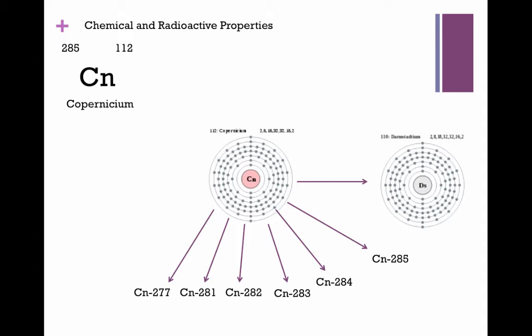Copernicium's most stable isotope, Copernicium 285, has a half-life of about 30 seconds. It decays into Darmstadtium 281 through alpha decay.